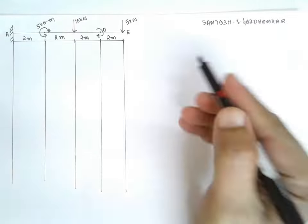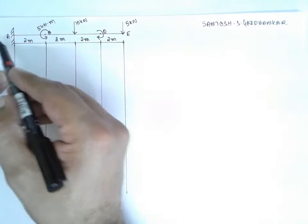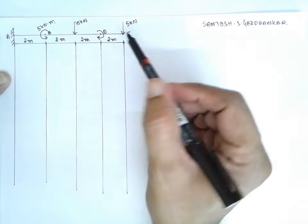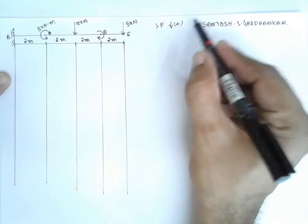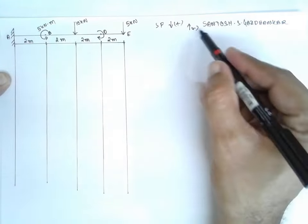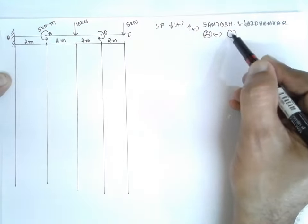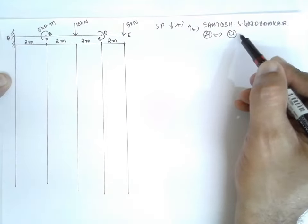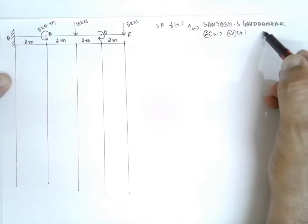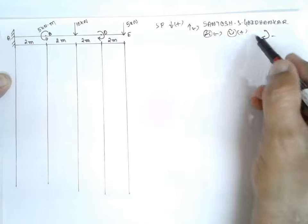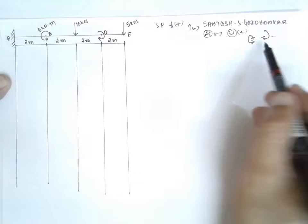Today I am teaching you the strength of materials, or mechanics of materials, for a cantilever fixed beam having a point load and a couple. For shear force, the upward direction I will consider as positive and downward as negative. For bending moment, a sad face (hogging) is negative and a smiling face (sagging) is positive. For couples, clockwise is negative and anti-clockwise is positive. These are the assumptions I am making to solve the cantilever beam.